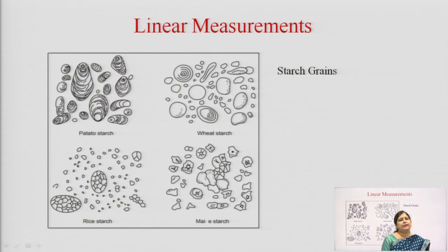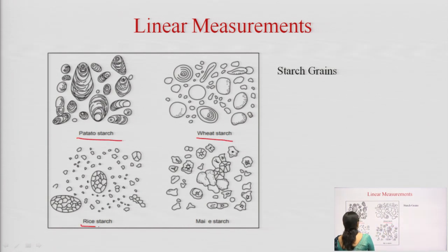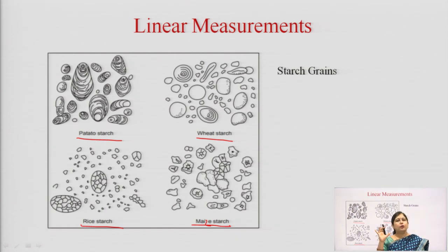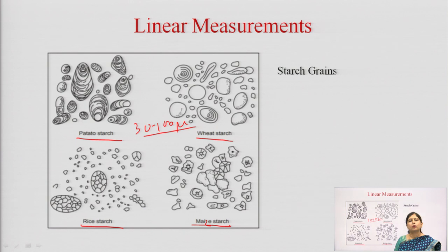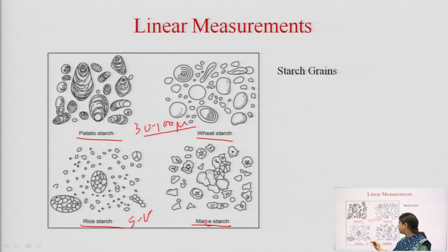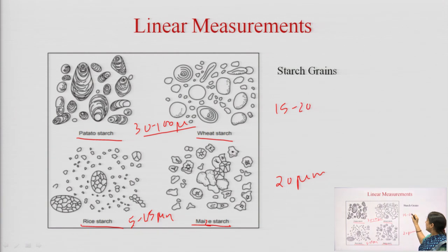In this slide you can see starch grains obtained from different sources: potato starch, wheat starch, rice starch, and maize starch. These starches have different shapes and patterns. You may have always seen starch as a white colored smooth powder, but under the microscope they are very different in shape, form, and size. The largest starch is potato starch at 30 to 100 micrometers, rice starch is very small at about 5 to 15 micrometers, and maize and wheat starch are about 15 to 20 micrometers.